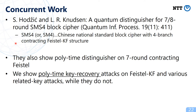Very recently, we noticed a concurrent work by Hosoyamada and Knudsen, titled 'A Quantum Distinguisher for 7 and 8 Round SMS4 Block Cipher,' recently published in a journal. SM4 is a Chinese national standard block cipher with a 4-branch contracting Feistel KF structure. In their paper they show a polynomial time distinguisher on 7-round contracting Feistel, whereas we show not only a distinguisher but also polynomial time key recovery attacks on Feistel KF and various related-key attacks.